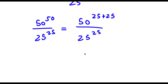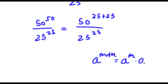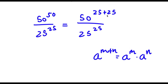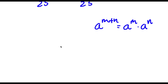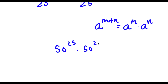So now, if I have something in the form a to the power of m plus n, this is equal to a to the power of m times a to the power of n. So in this case I have 50 to the power of 25 plus 25, which is the same thing as 50 to the power of 25 times 50 to the power of 25.